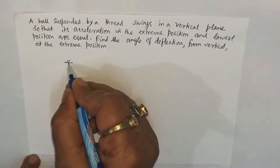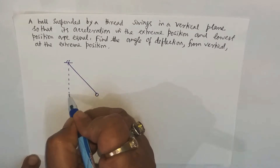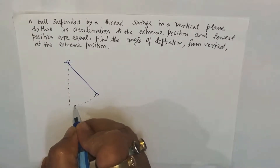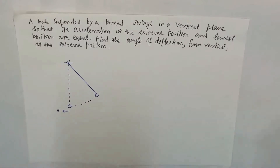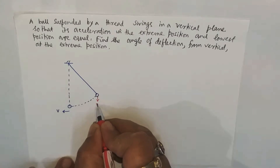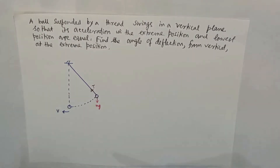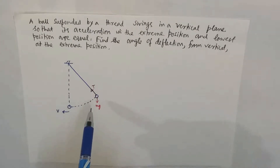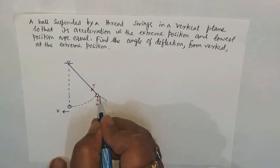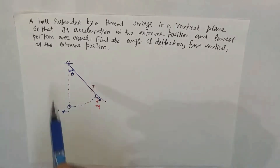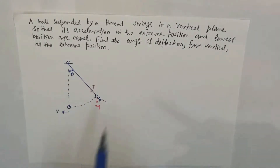It is given that a pendulum — a particle suspended by a thread — swings. This is the vertical position; while passing through it, the particle will have some velocity v. This is the extreme position where it is momentarily at rest. The forces acting at this moment are mg and the tension T. Since velocity is zero, there is no requirement of centripetal force at the extreme position. The angle with the vertical at the extreme position is theta, which we have to find.